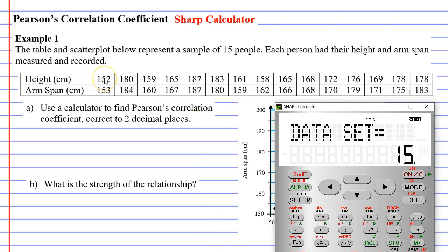Alright, now I've finished putting in 15 sets of data values. My calculator says data set equals 15 so that implies that I've done it correctly. If you do make a mistake it's really annoying. You have to reset and start again. This is one of the advantages of the Casio calculator where you don't have to reset.